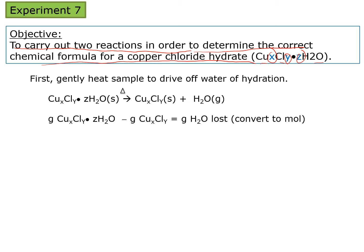Here is an overview of what you'll be doing in the experiment. The first thing you're going to do is heat your sample of copper chloride hydrate in order to drive off the water of hydration. When heated, the sample will be left with solid copper chloride and the water will be evaporated as steam. You'll then determine the mass of water lost by weighing before and after heating and calculating by difference. Once you have the mass, you can convert that to moles to solve for Z, the moles of water in your formula.